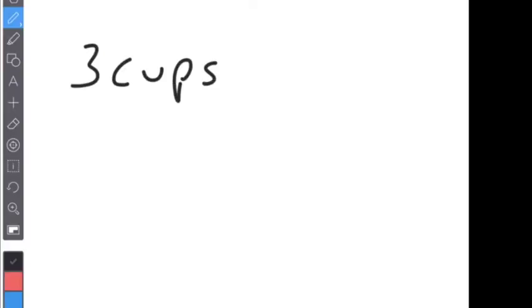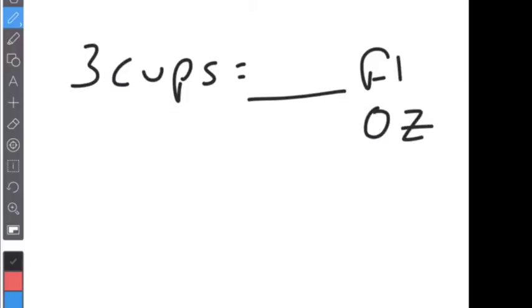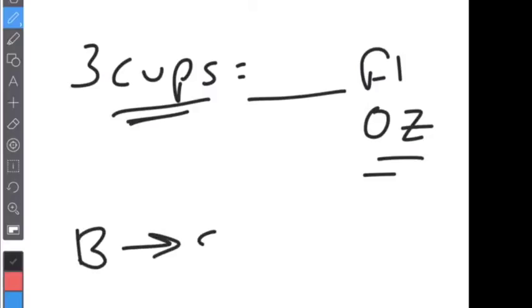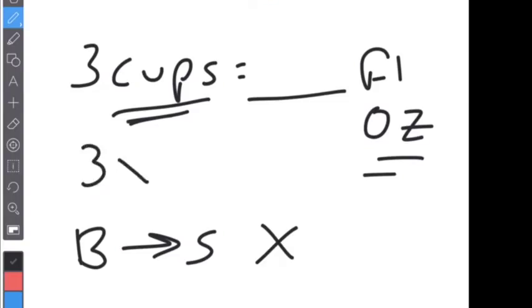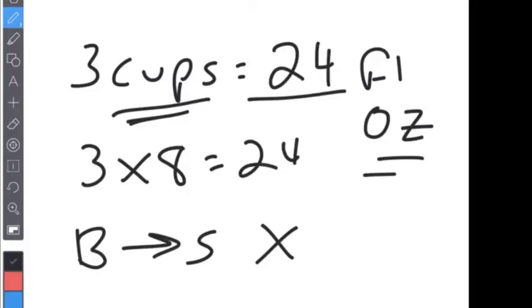If I say we have three cups and I need to get to fluid ounces, I look at the unit. I'm going from cups to fluid ounces, so I'm going from a bigger unit to a smaller unit. Whenever you go from big to small, we multiply. There are eight fluid ounces in one cup, so I take three times eight and get 24. Three cups equal 24 fluid ounces.